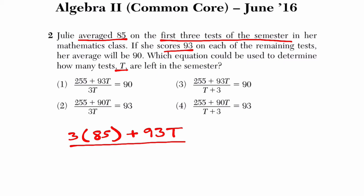Well, how many tests are there? There were three tests that she scored an 85 on, and then there were t tests that she will score 93 on. So we have three and t, or three plus t tests. And that altogether should get you an average of 90, which it does. So if you look at choice three, that's the correct response.